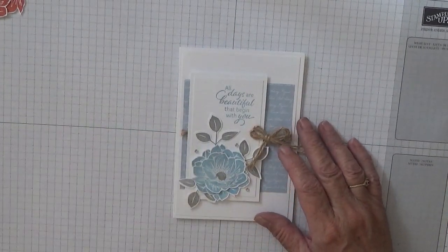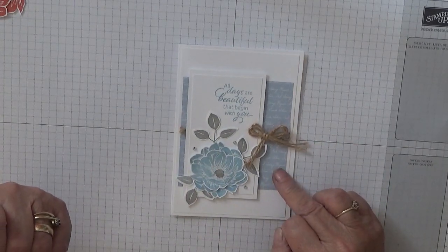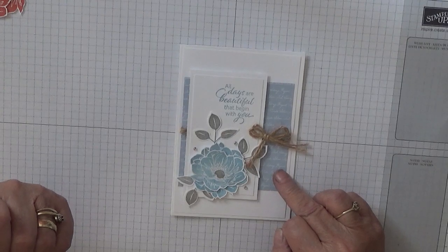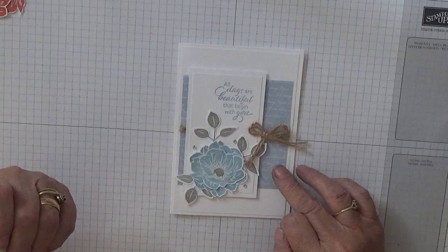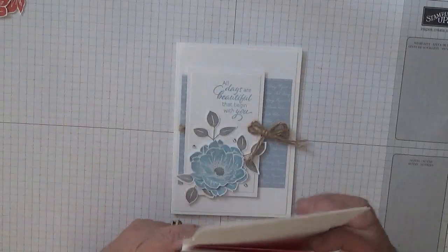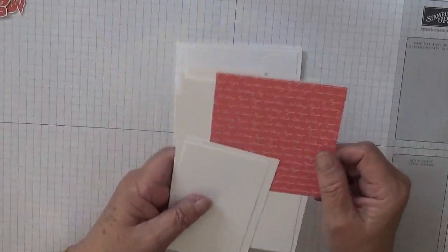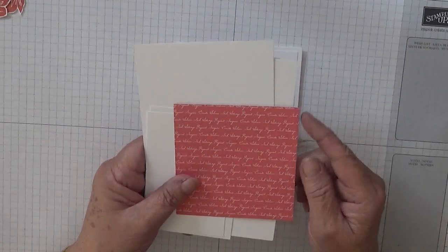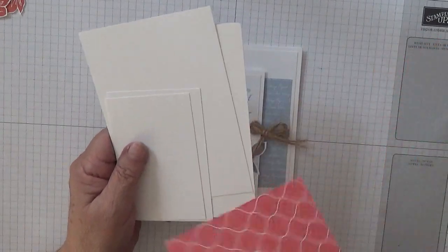So I am changing the colors. On here I used the soft sea spray, I think it's called, can't remember, new color. I'm going to use a different new color and this is terracotta tile and you'll need a piece of designer series paper.